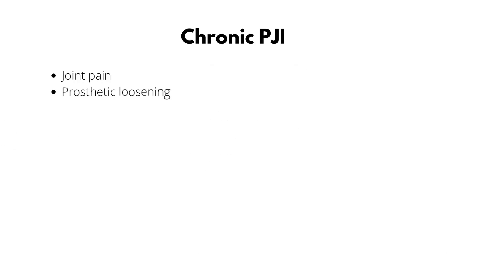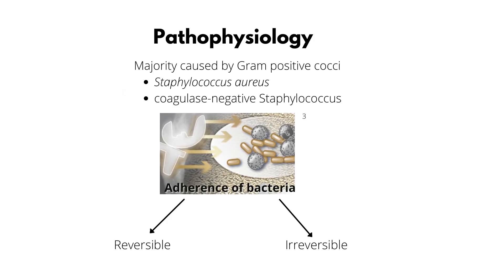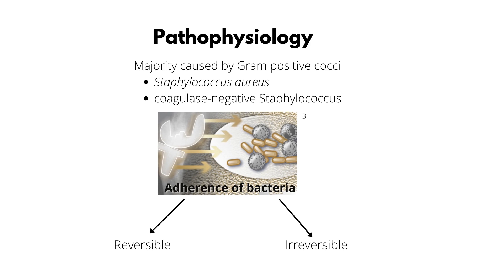Eventual progression to chronic periprosthetic joint infection will also present with pain and loosening of the prosthesis. Most prosthetic joint infections are caused by gram-positive cocci — Staph aureus and coagulase-negative Staph. However, there are some occasions where gram-negative bacteria and even fungi can result in prosthetic joint infection. It can also be polymicrobial.